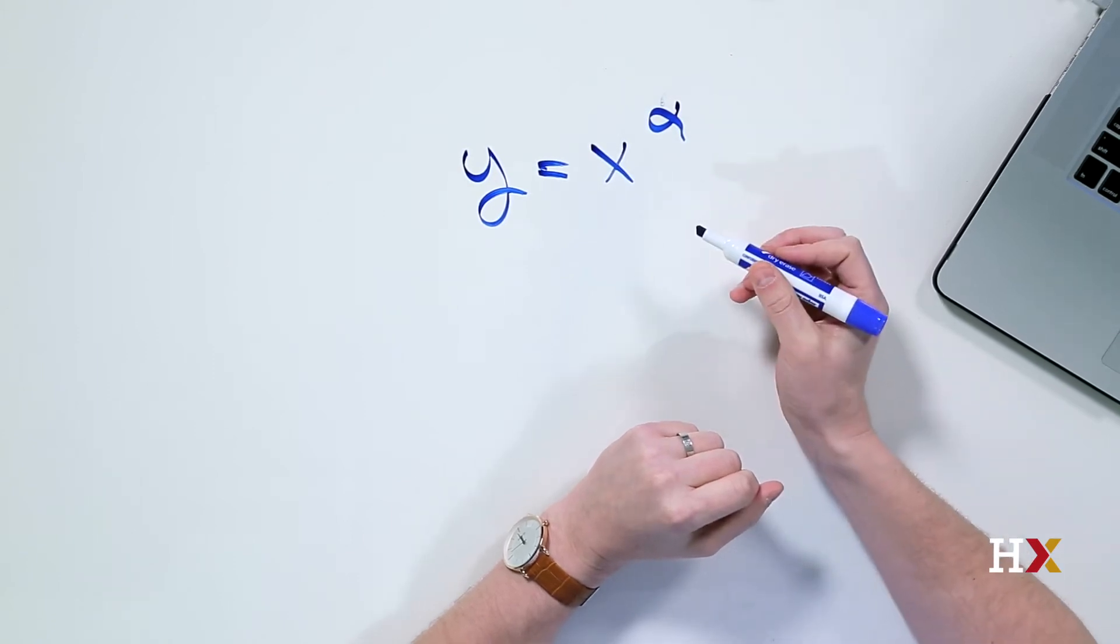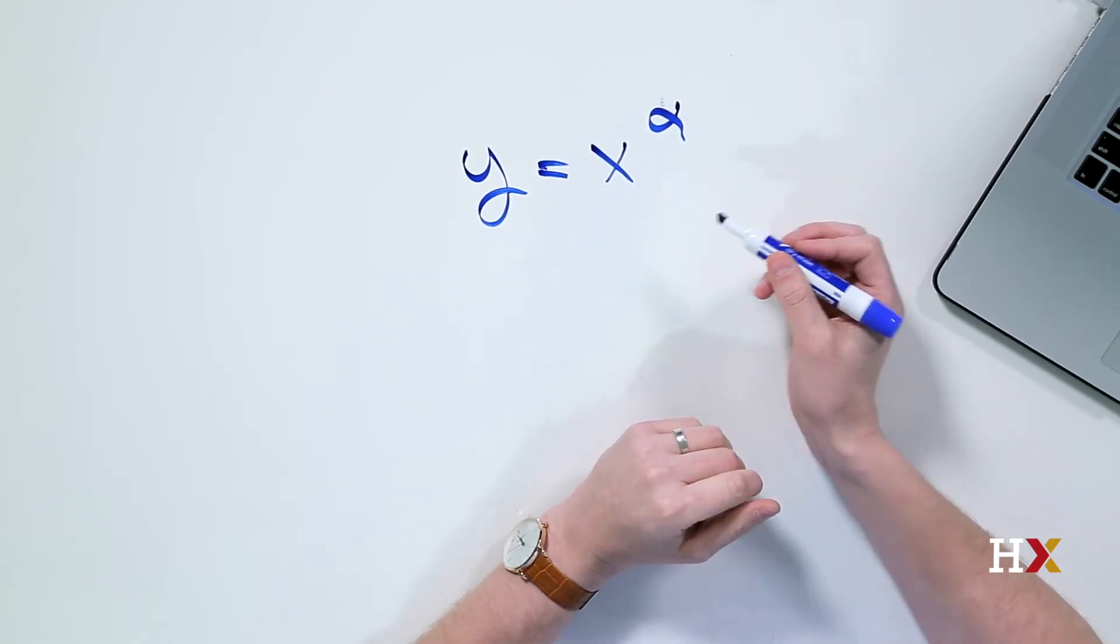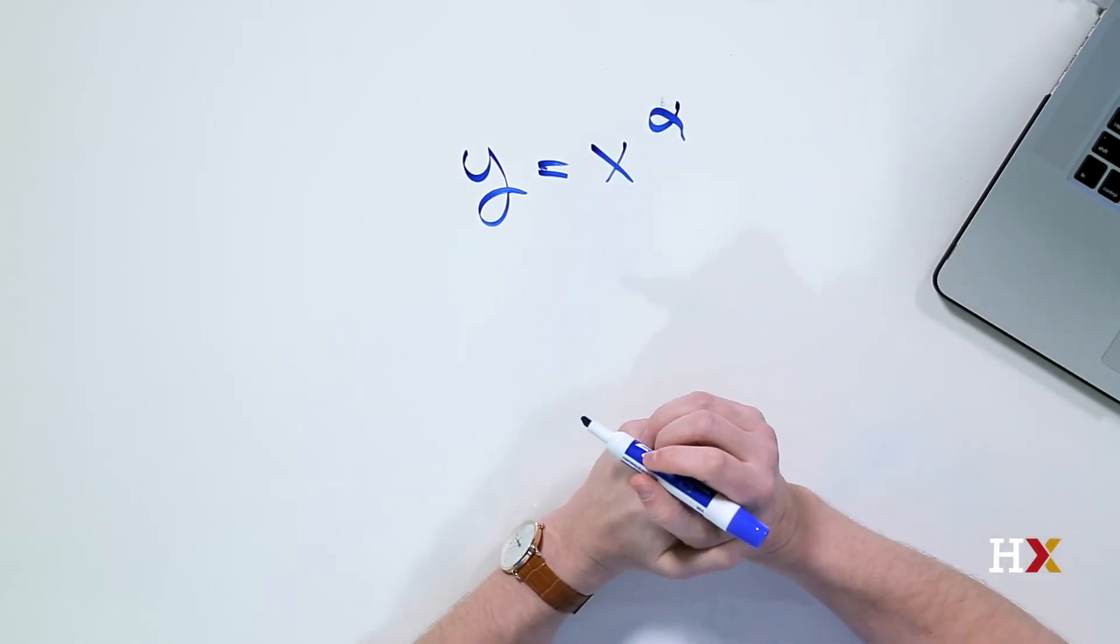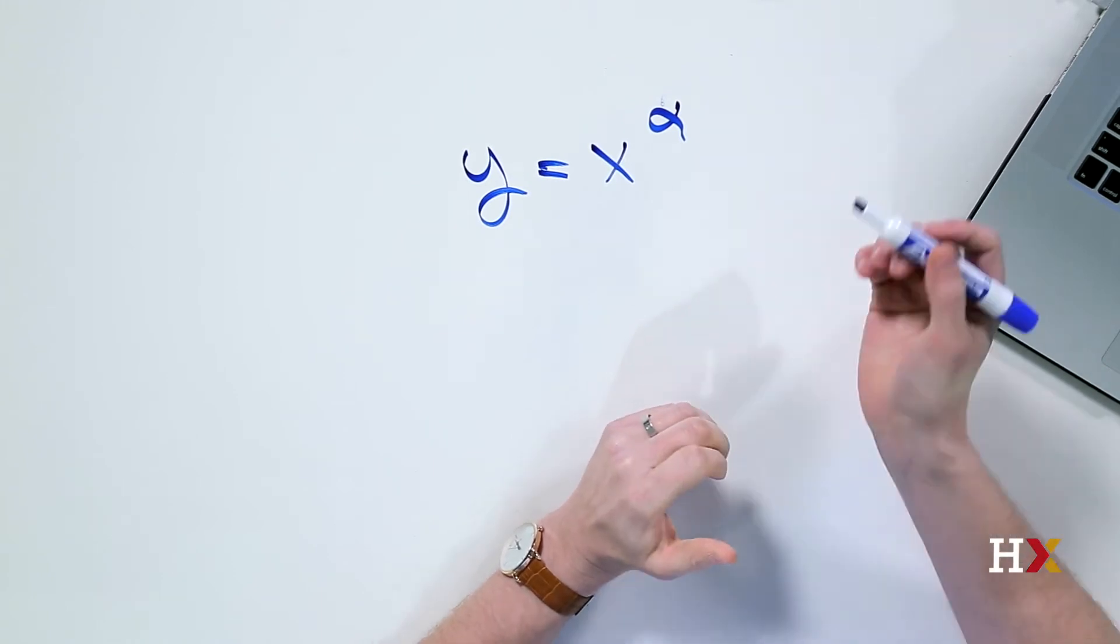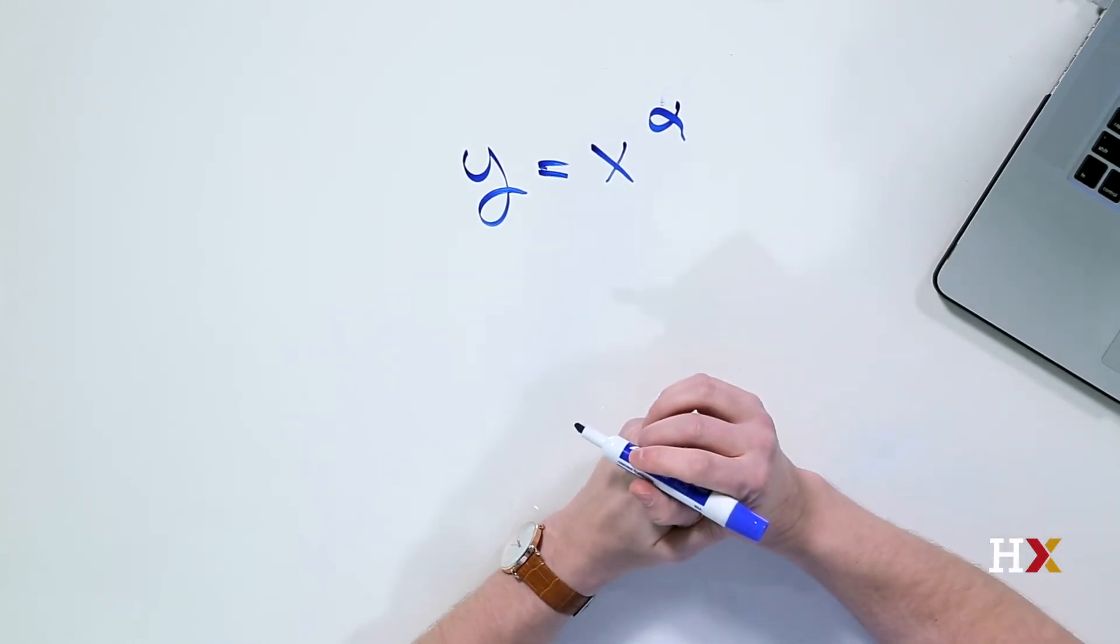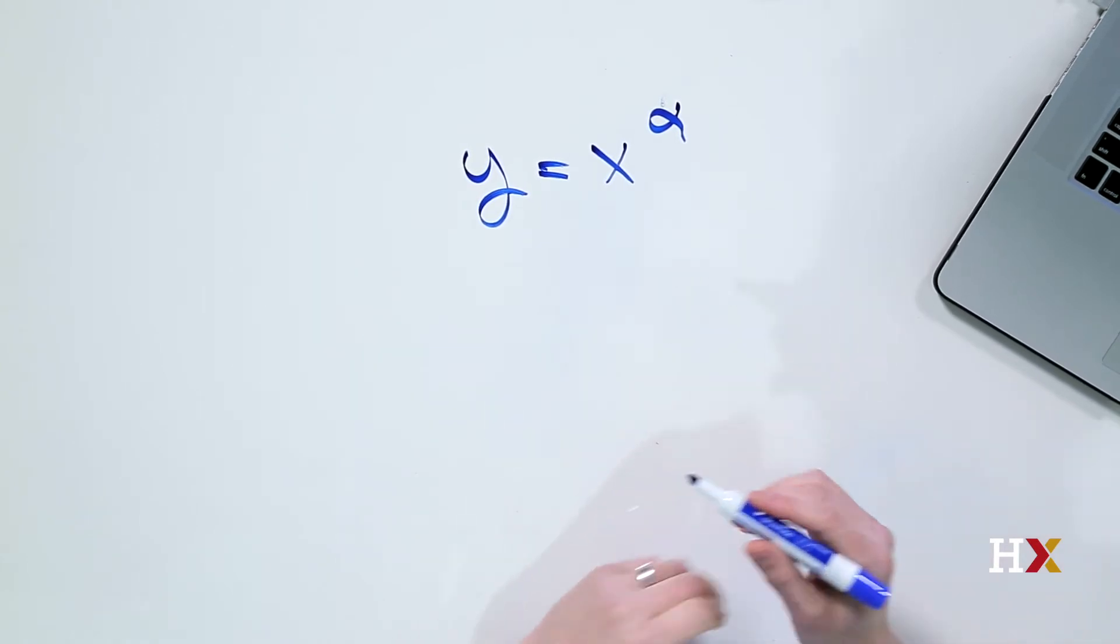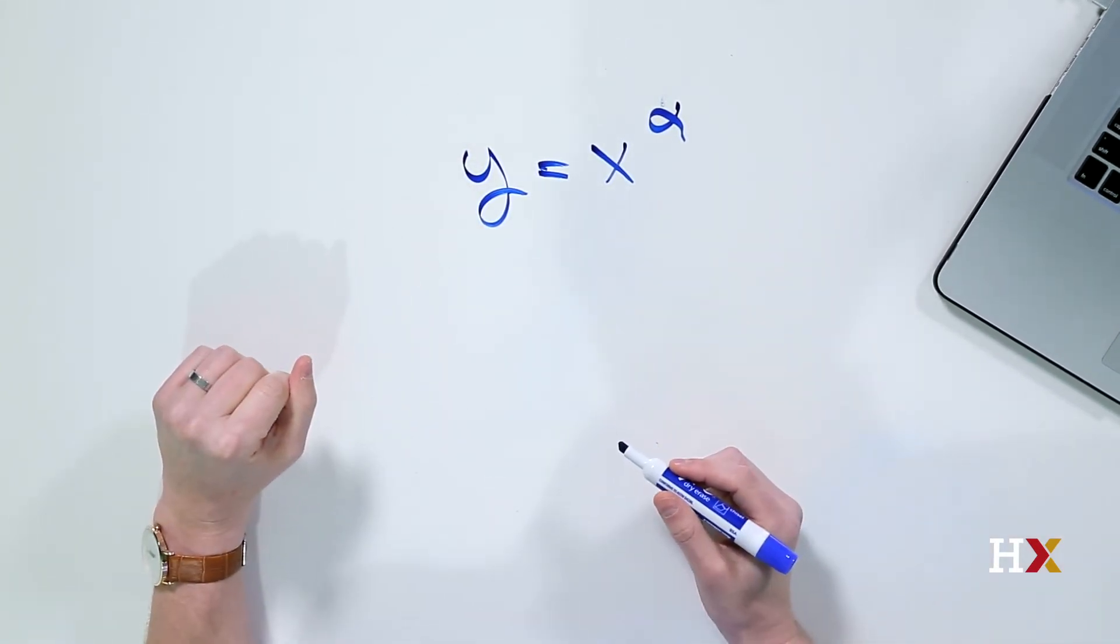If alpha is equal to 1, that corresponds to a line that goes through the origin. Alpha equal to half gives you the square root, and alpha equal to 2 gives us a parabola. Let's see what we can do with this equation.